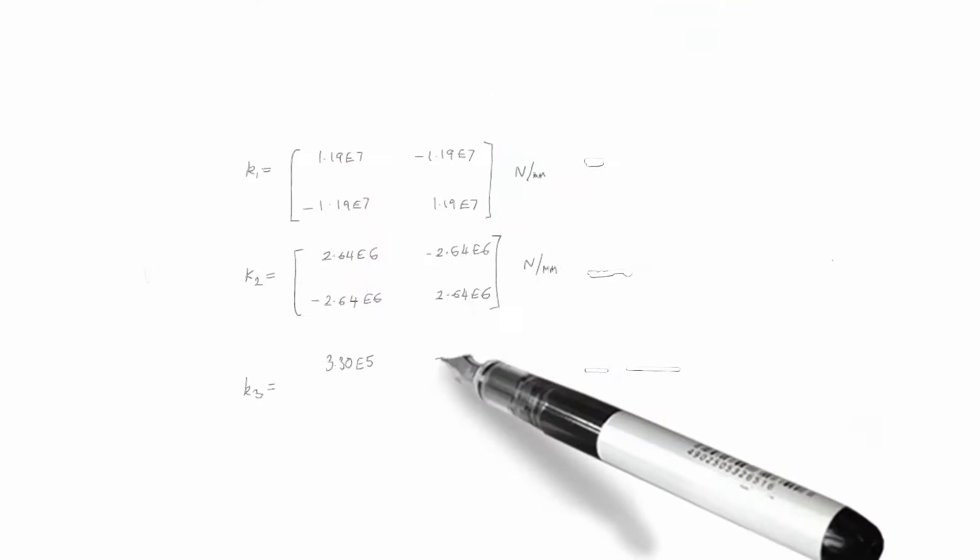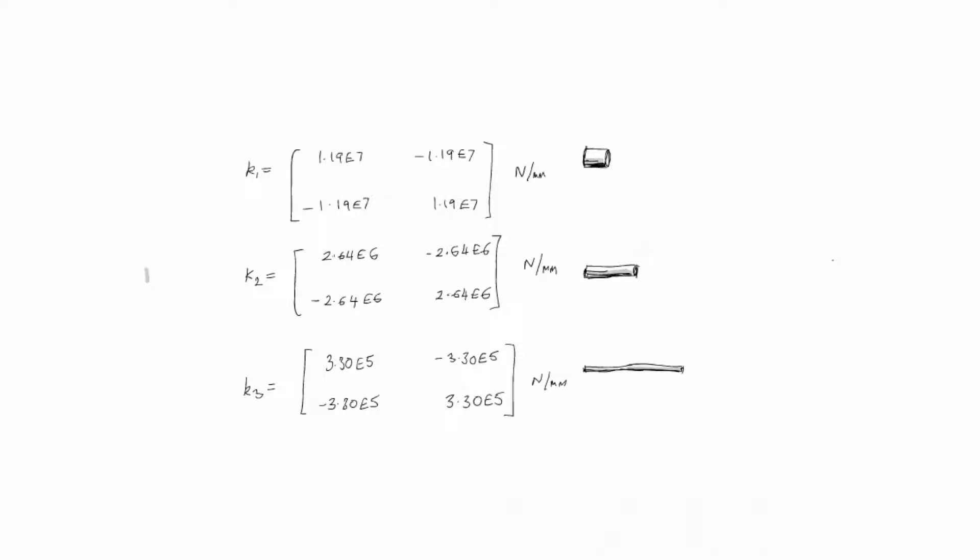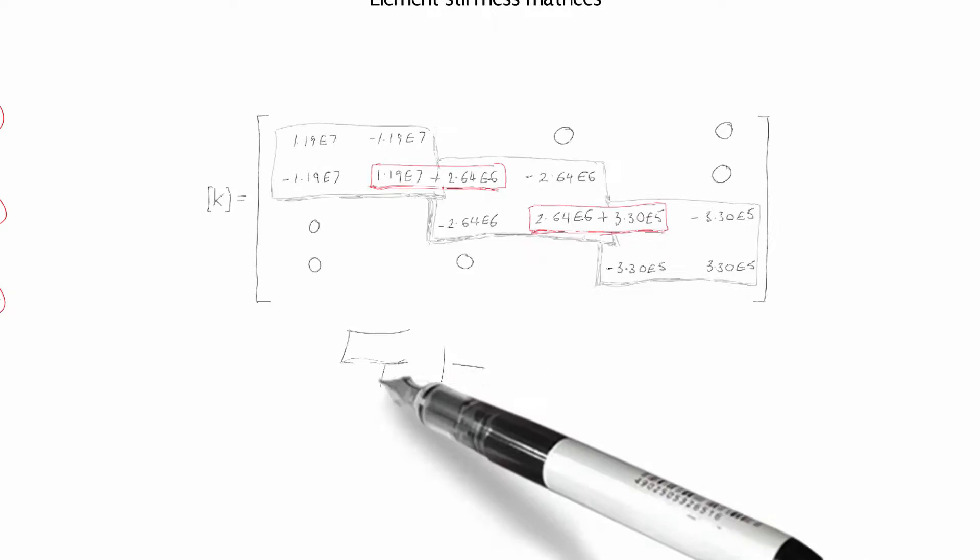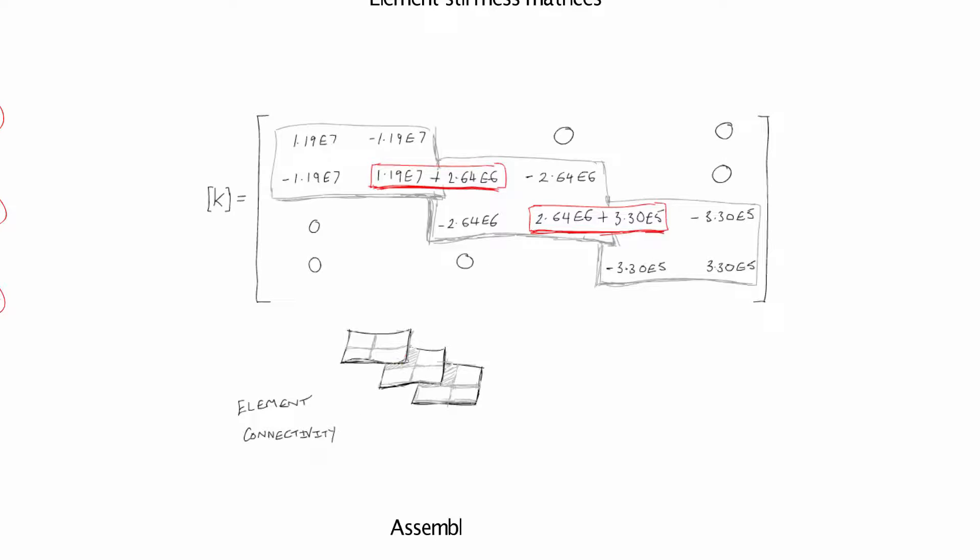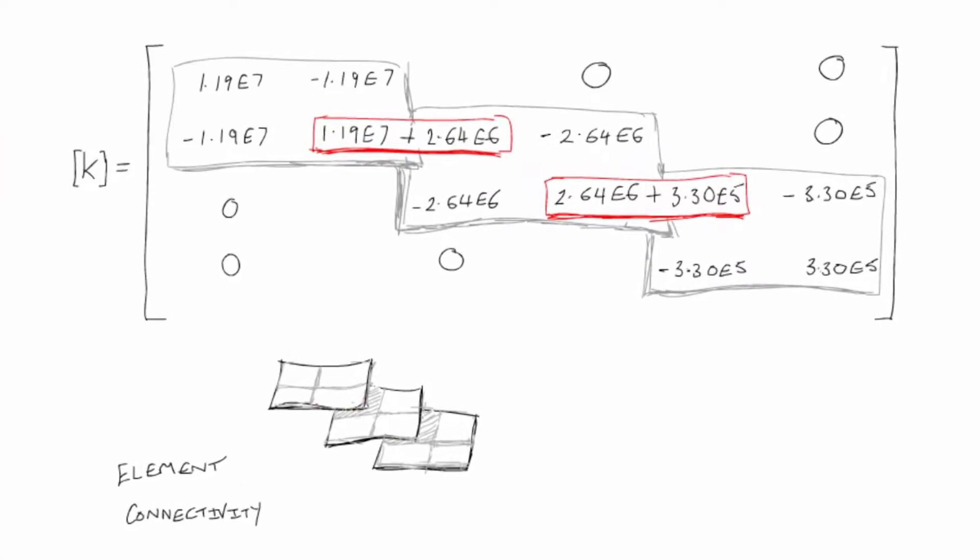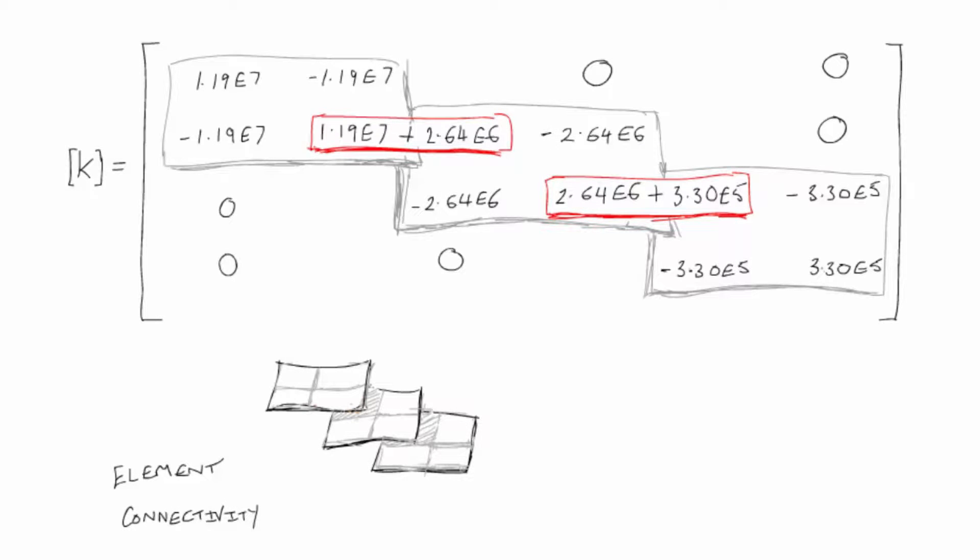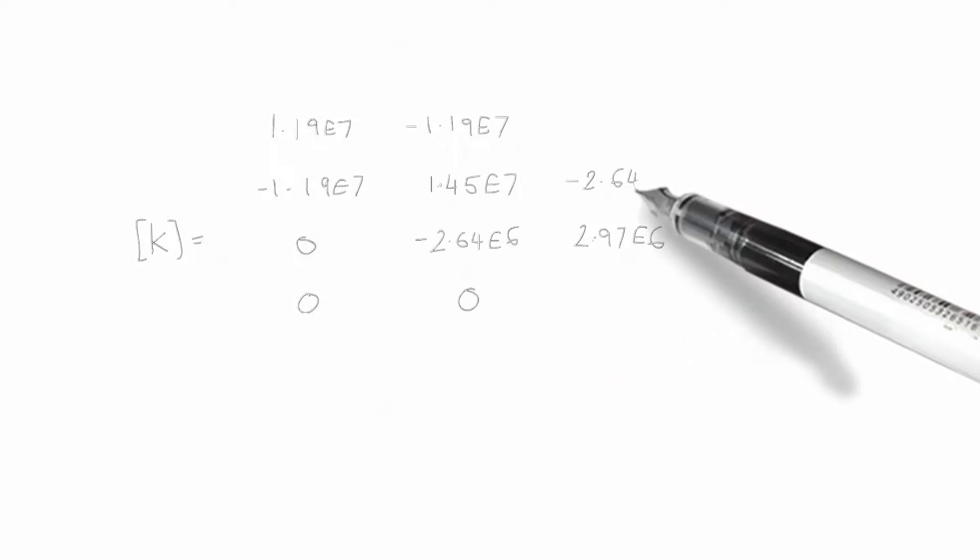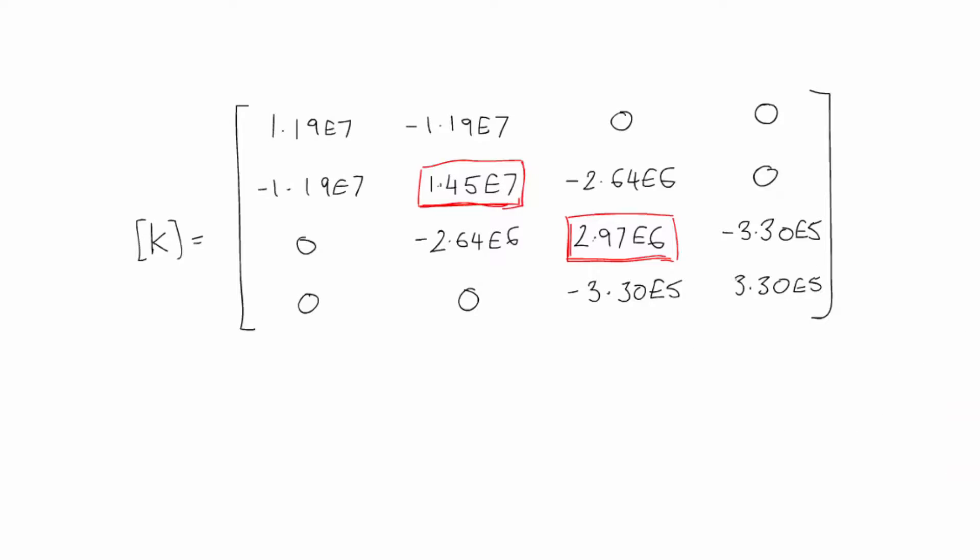Numerical values are inserted into the element stiffness matrices, and there's a reminder of the geometry. The numerical values of the assembled stiffness matrix are shown together with the overlaps. Finally here are the numbers calculated for the full system stiffness matrix.